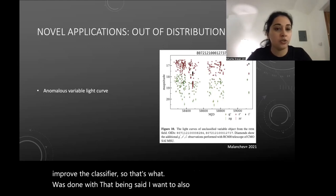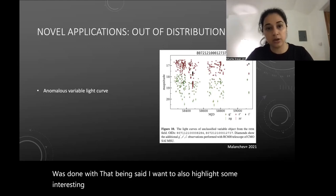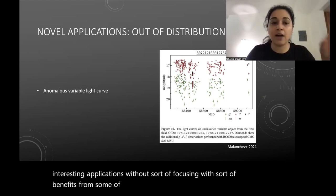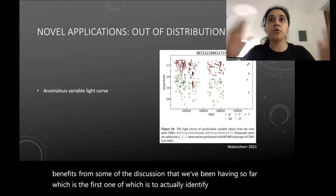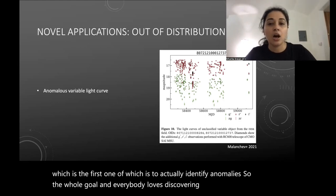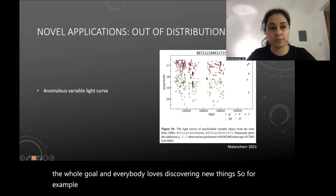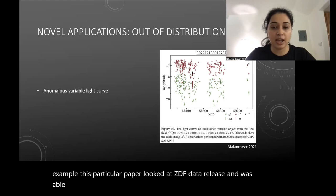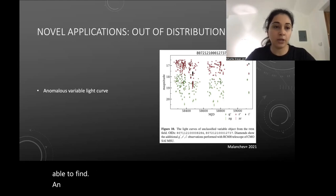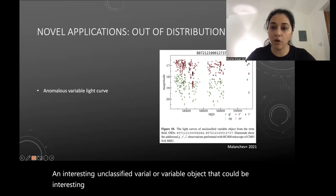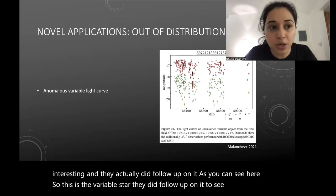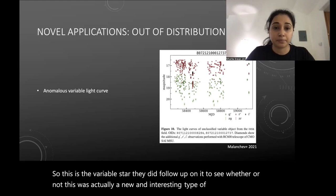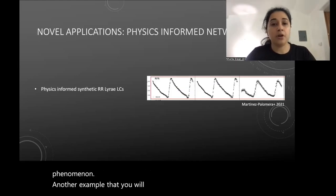I also want to highlight some interesting applications. The first is anomaly detection — everyone loves discovering new things. One paper looked at ZTF data release and found an interesting unclassified variable object that could be a new phenomenon. They did follow-up observations on this variable star to determine whether it was actually a new and interesting type of phenomenon.